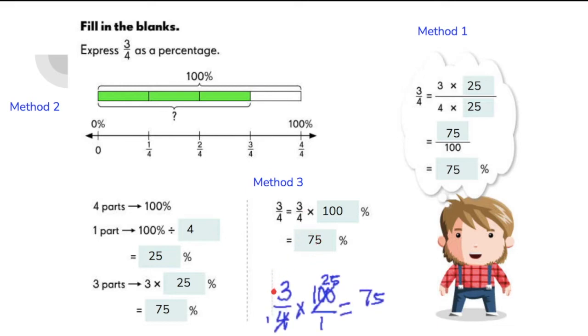If you recall how to multiply a fraction by a whole number, we can just say that 100 is actually over 1 because 100 divided by 1 is equal to 100. So using the cancellation method, we will arrive at this answer, which is 75. That's why we got 75%. Let's try another example.